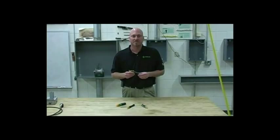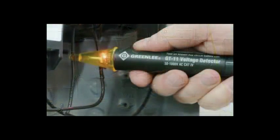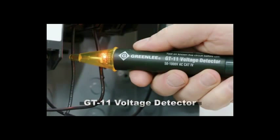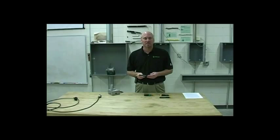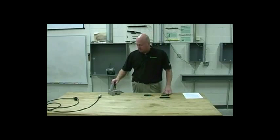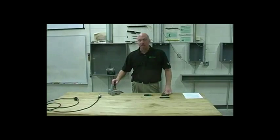This is the GT11. The GT11 is a Category 4 1,000 volt rated non-contact voltage detection tester. This tool operates as low as 50 volts and signals the user of AC voltage with intermittent lights and a tone.